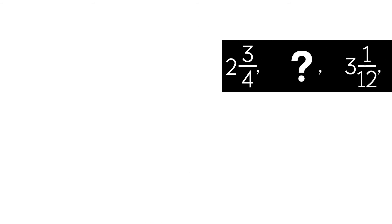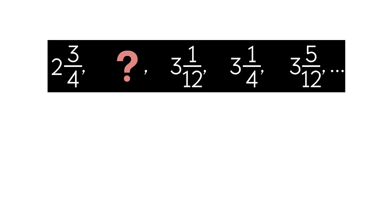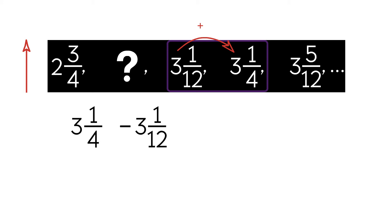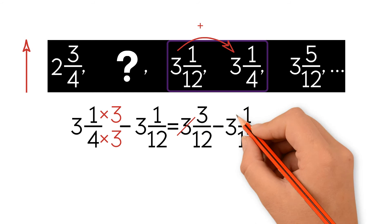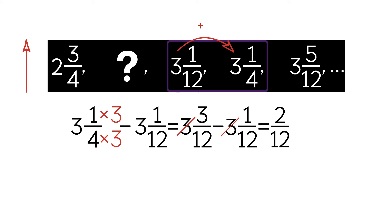Let's do a different example. This time we have an unknown term. To find the unknown term, we need to find the rule for the sequence. We can see that the sequence is increasing. To find the rule, we're going to use the third and fourth terms and subtract the smaller number from the larger. The least common denominator between 4 and 12 is 12. We multiply the denominator and the numerator of 3 and 1 fourth by 3, giving us 3 and 3 twelfths minus 3 and 1 twelfth, which equals 2 twelfths. We can simplify to get 1 over 6, so the rule is to add 1 sixth.